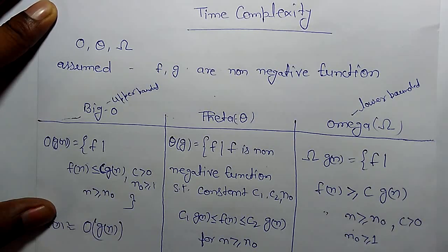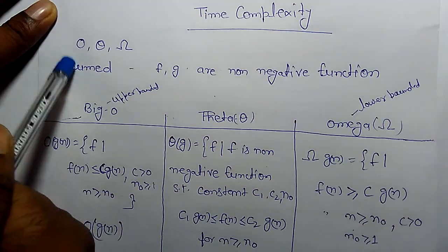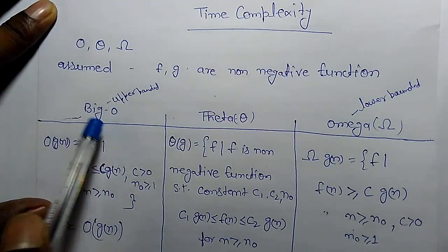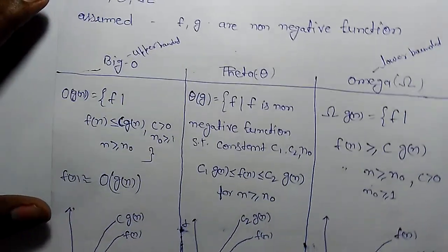Hi, today we are going to learn how to find time complexity of a particular function. There are three types of asymptotic notation we have seen in last class: Big O, Theta, and Omega. Big O is upper bounded values.